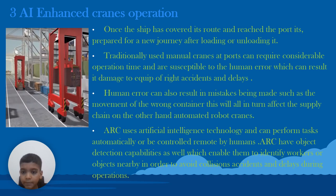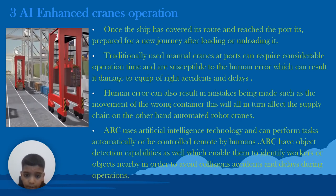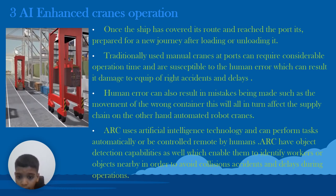Human error can also result in mistakes such as the movement of the wrong container, which will in turn affect the supply chain. Automated robot cranes (ARC) use artificial intelligence technology and can perform tasks automatically or be controlled remotely by humans. ARC have object detection capabilities which enable them to identify workers or objects nearby in order to avoid collisions, accidents, and delays during operations.